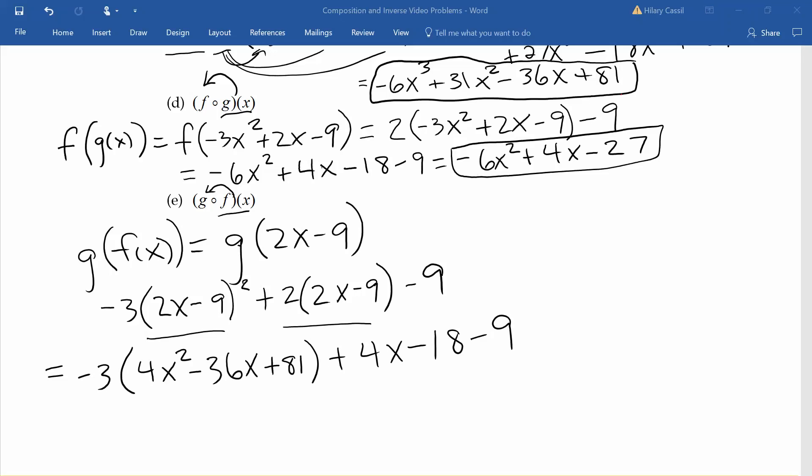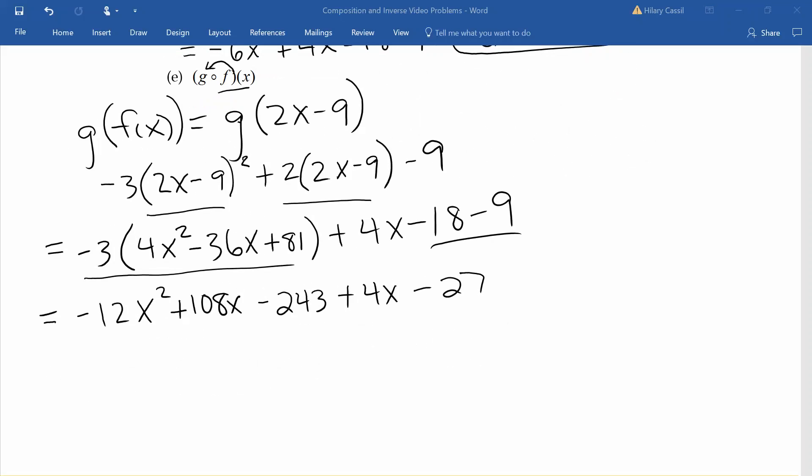We will again need to distribute in our first parentheses here. We'll combine these like terms, and combining the like terms that we have left, we'll get a final answer of negative 12x squared plus 112x minus 270. The order of composition does matter. Now we'll take a look at a composition application.